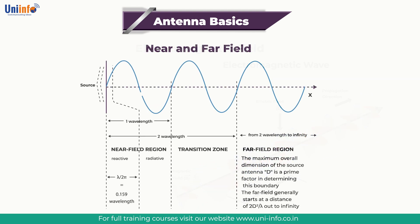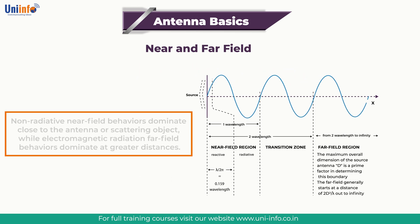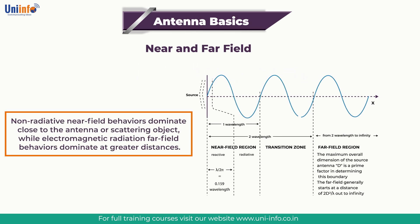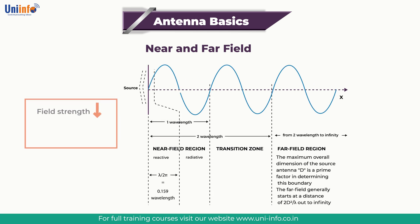Near and Far Field. The near field and far field are regions of the electromagnetic field around an object, such as a transmitting antenna or the result of radiation scattering of an object. Non-radiative near-field behaviours dominate close to the antenna or scattering object, while electromagnetic radiation far-field behaviours dominate at greater distances. Far field E (electric) and B (magnetic) field strength decreases as the distance from the source increases, resulting in an inverse square law for the radiated power intensity of electromagnetic radiation.